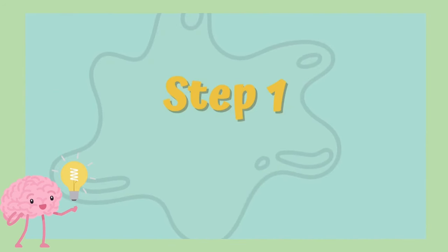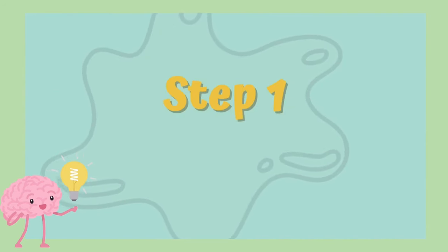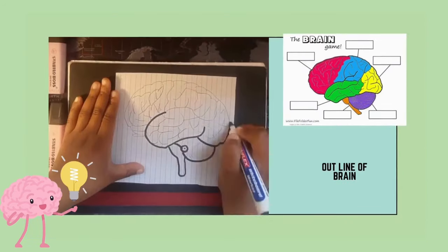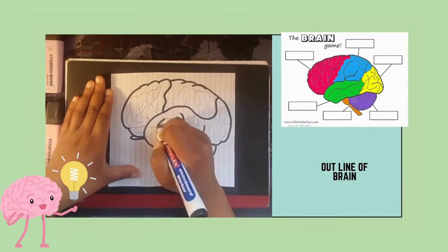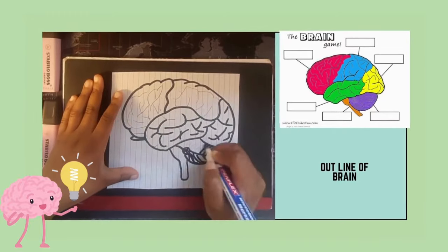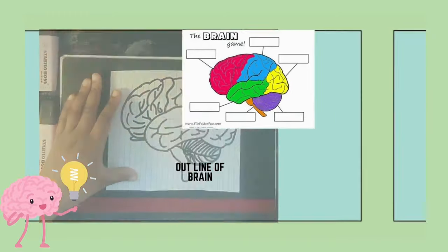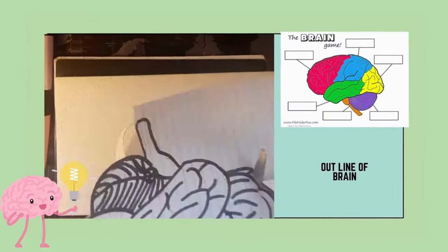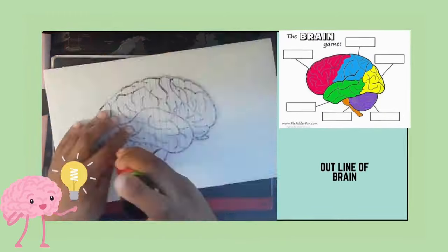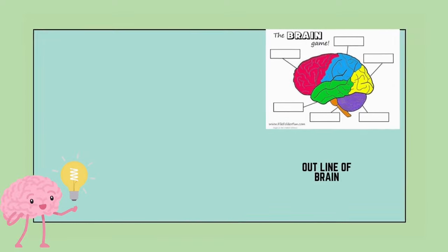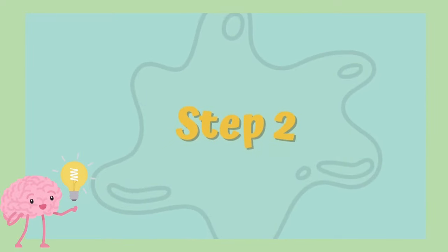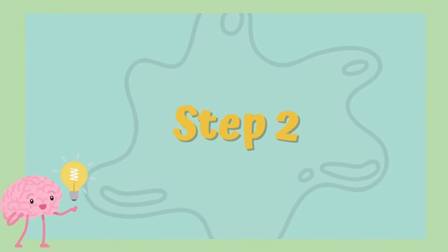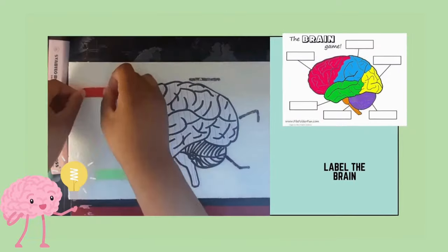Step 1: Draw an outline of a brain so you can have a guideline. Then cut it out into a smaller piece and paste it onto a board.